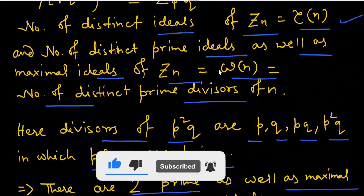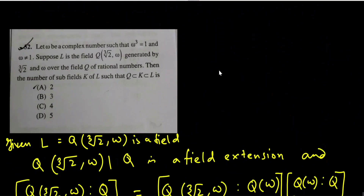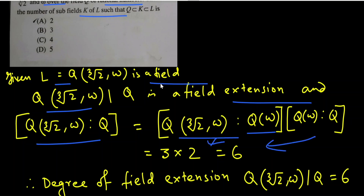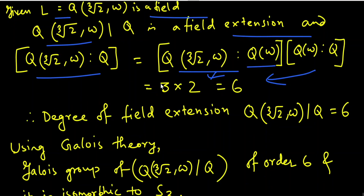The next question: let ω be a complex number such that ω³ = 1 and ω ≠ 1. Suppose L is the field Q(∜2, ω) generated by ∜2 and ω over Q. Find the number of subfields. We have [Q(∜2, ω) : Q] = [Q(∜2, ω) : Q(ω)] · [Q(ω) : Q] = 2 × 3 = 6. So the degree of the field extension L over Q is 6.